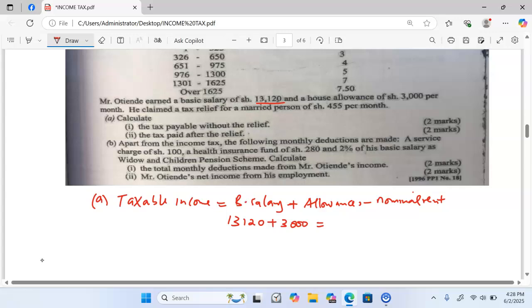We have a basic salary of 13,120. We add a house allowance of 3,000. We do not have any other allowances or nominal rent. And therefore, when you add the two, you'll get a total of shillings 16,120. And this is per month.